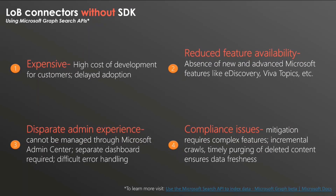Today you can create line-of-business or custom connectors using Microsoft's Graph Search APIs, but there are a few drawbacks. The cost of development is high because these APIs are not specifically made for building connectors — connector-specific functionalities are absent and you need to develop them on your own. Reduced feature availability means things like e-discovery and Viva Topics won't come out of the box. You also need to build a separate admin experience just to monitor all these custom connectors.